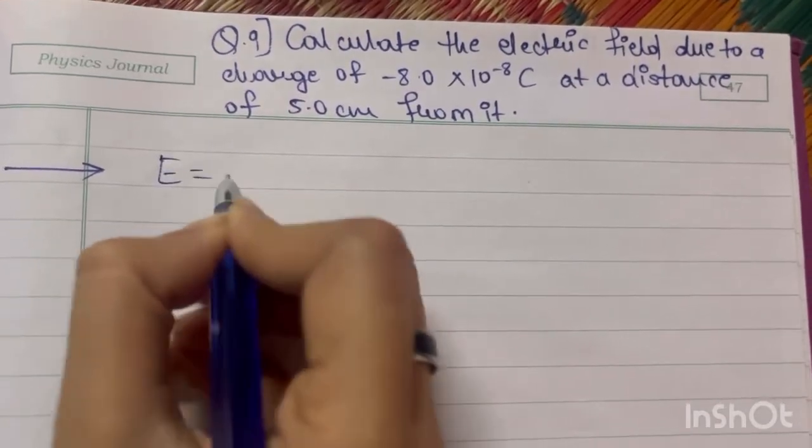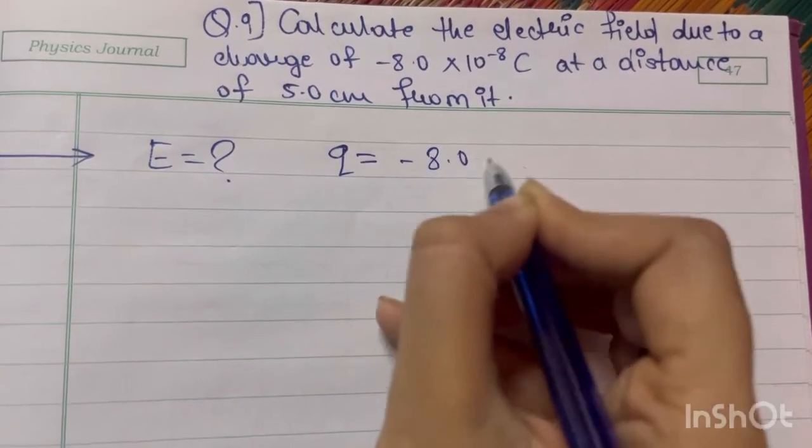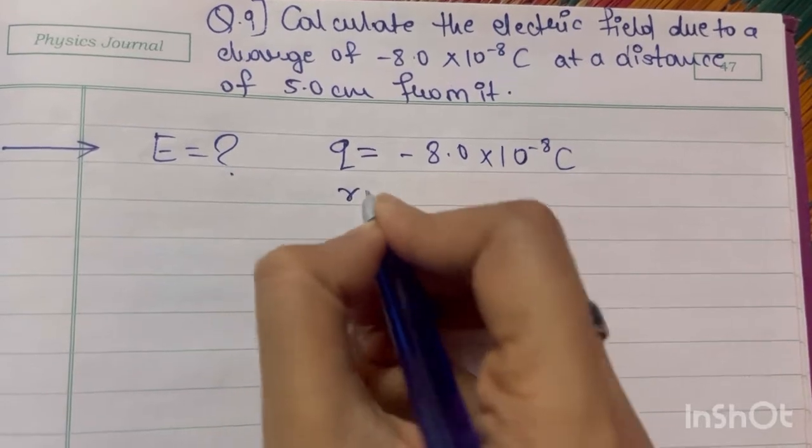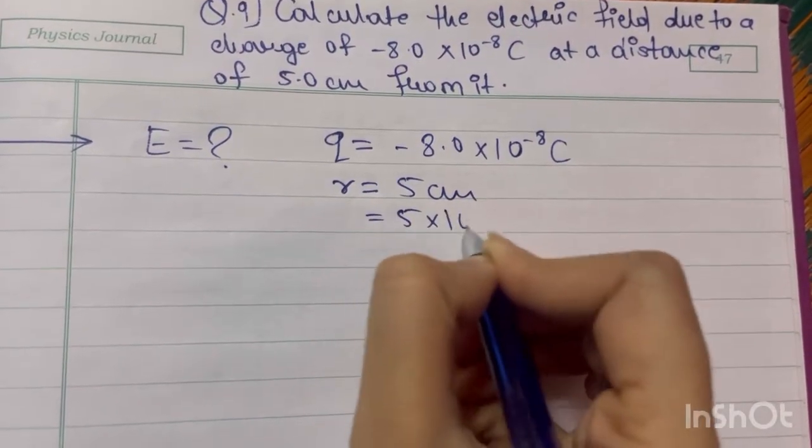They are asking you to calculate electric field due to a charge of value minus 8.0 times 10 raised to minus 8 coulomb at a distance of 5 cm, that is 5 times 10 raised to minus 2 meter.